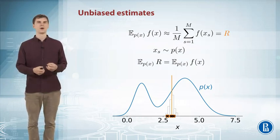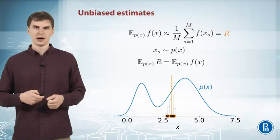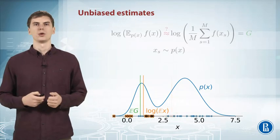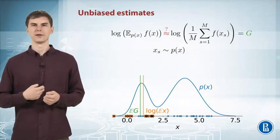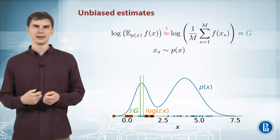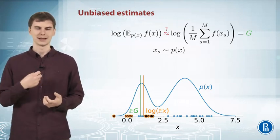All the samples of R lies around the expected value which we want to approximate. But how can it not be true? Well, if you look, for example, at the logarithm of the expected value and try to approximate it with Monte Carlo, it's kind of natural to approximate it like logarithm of the sampled average, right?